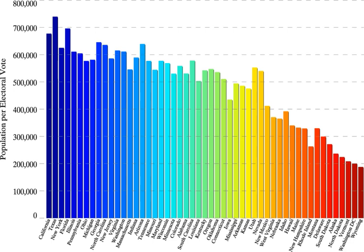Specifically, in the 2000 election, Al Gore won 543,895 more votes nationally than George W. Bush, but Bush secured five more electors than Gore, in part due to a narrow Bush victory in Florida. In the 2016 election, Hillary Clinton won 2,868,691 more votes nationally than Donald Trump, but Trump secured 77 more electors than Clinton, in part due to narrow Trump victories in Michigan, Pennsylvania, and Wisconsin.